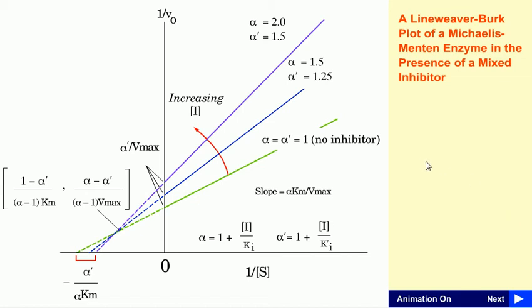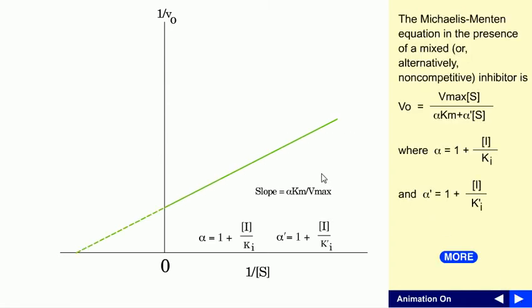Now we are going to look at another Lineweaver-Burk plot for a Michaelis-Menten enzyme in the presence of a mixed inhibitor. This mixed inhibitor will have some different effects on the graph as we will see.